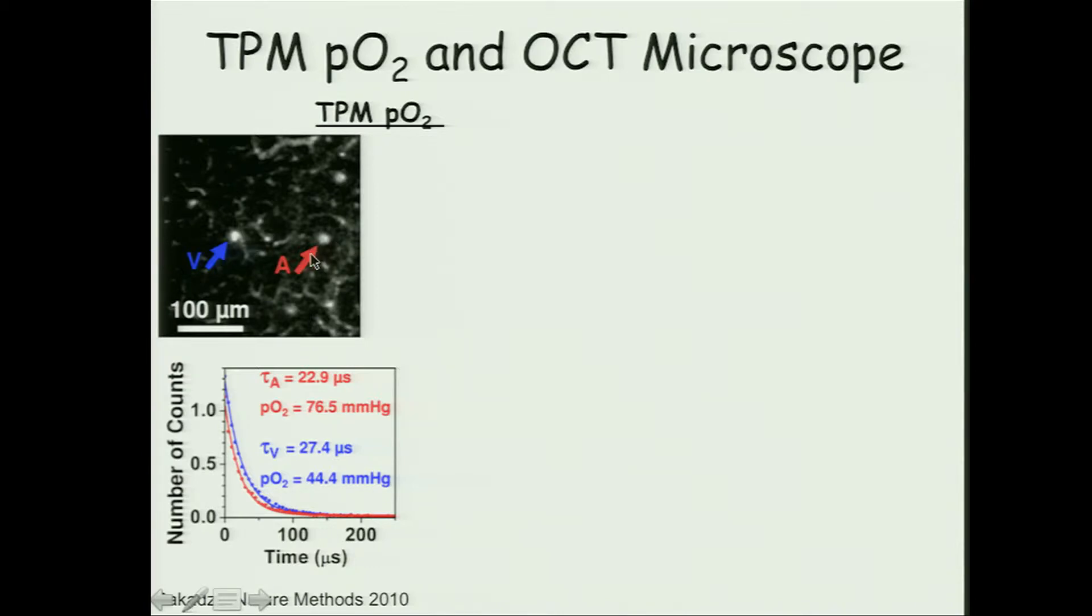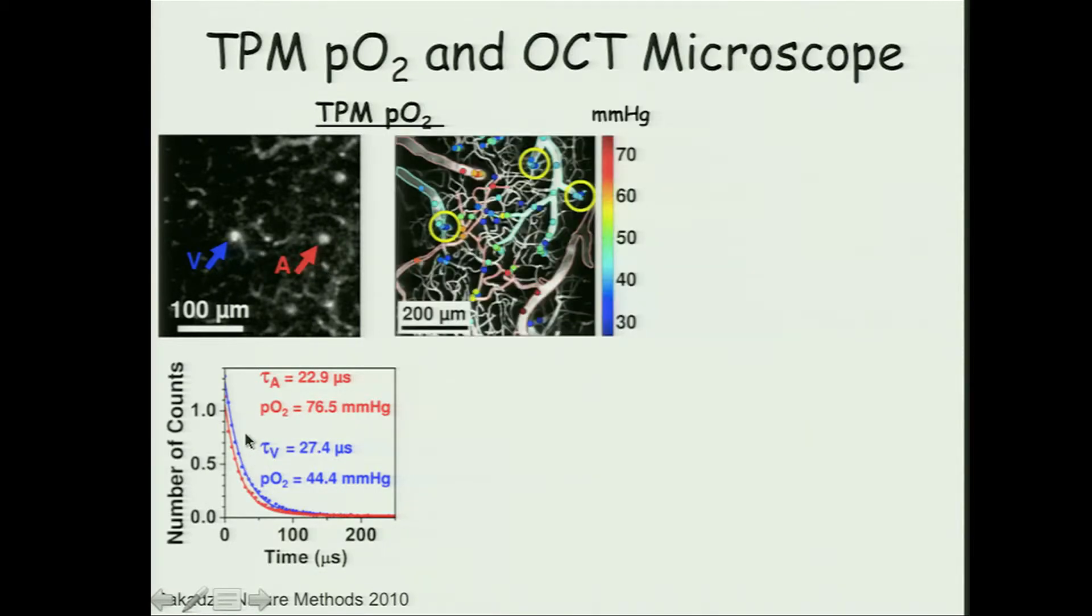So here, you can see one representative image of the phosphorescent agent. You can pick out a vein and an artery, and you can see the lifetime of the phosphorescence from those vessels. The artery in red has a shorter lifetime because the greater abundance of oxygen is quenching the agent. So that lifetime is quantitatively related to PO2, and that way we get a quantitative value for the partial pressure of oxygen.